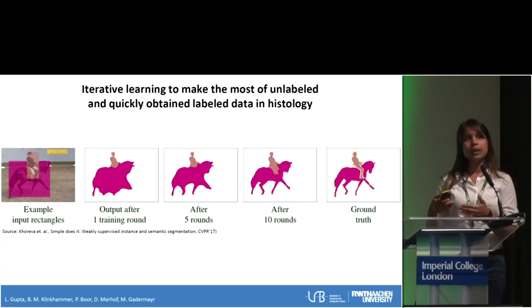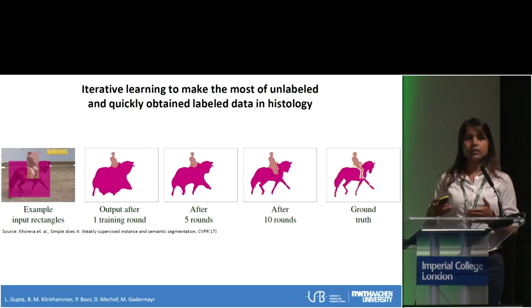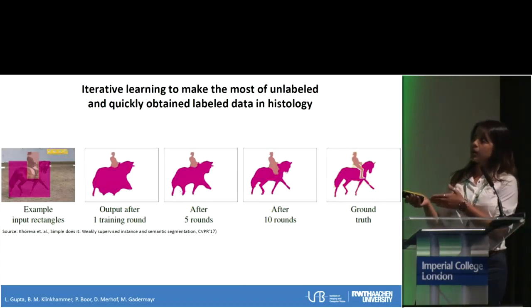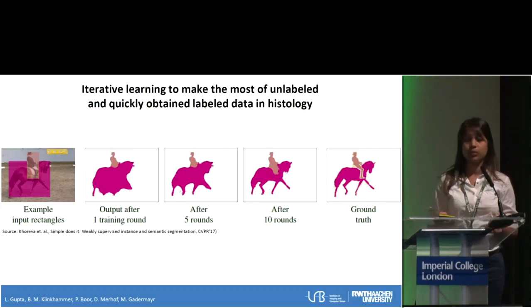And if you apply this iteratively, the segmentation result can really get much closer to the ground truth, although we didn't need perfect annotations.